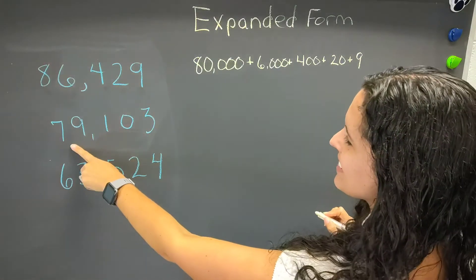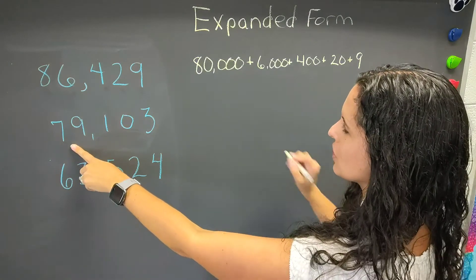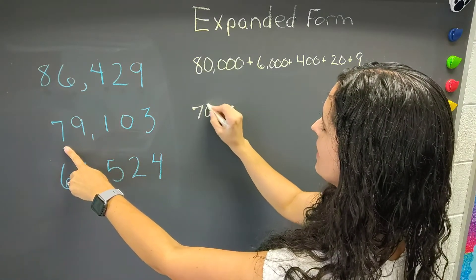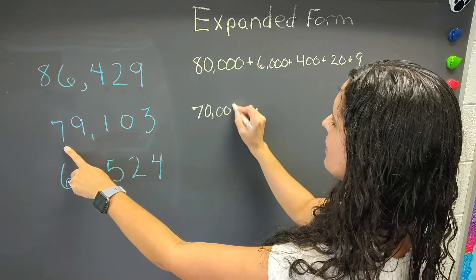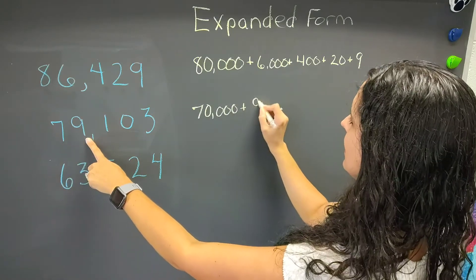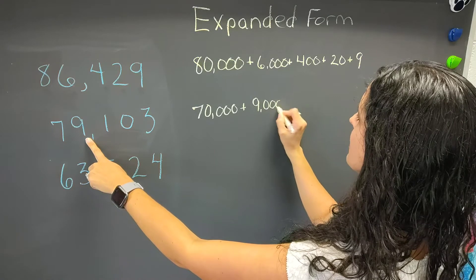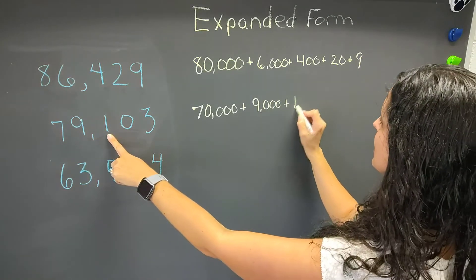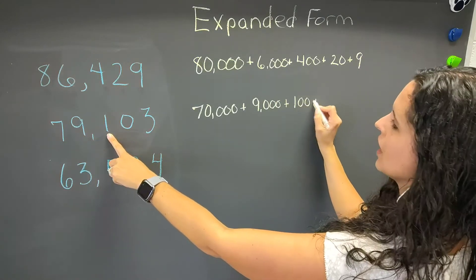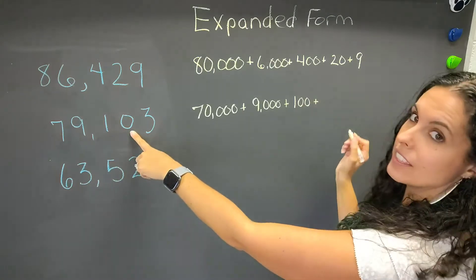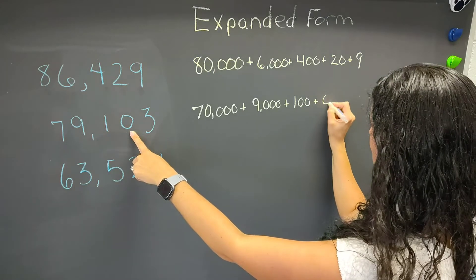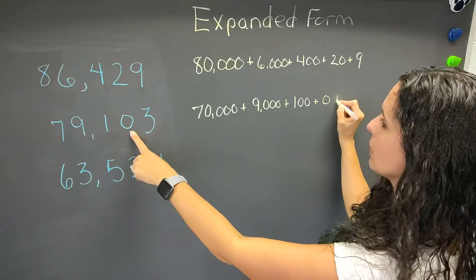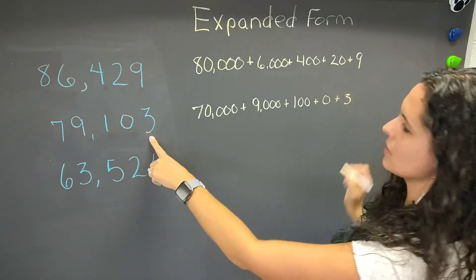Our next number is 79,103. The 7 is in the ten-thousands place: 70,000. Plus 9 is in the thousands place, plus 100 is in the hundreds place, plus there's nothing in the tens place — remember, you can either put plus zero or nothing there — plus three in the ones place.